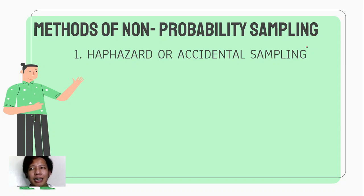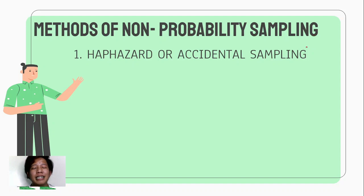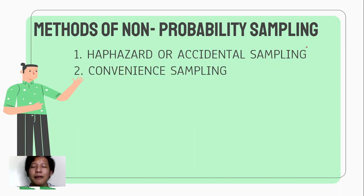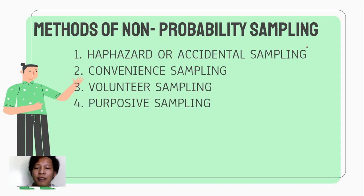For example, sa archaeology or history, accidental naman kasi nating makikita yung mga lumang gamit from the past — yun yung magiging sample mo. That is haphazard or accidental sampling. Next, we have convenient sampling — ikaw bilang researcher, ano ba yung convenient sa'yo o saan ka mas madali. Number three, we have volunteer sampling — kung sino lang yung gusto mag-volunteer sa research mo, then that would be your sample.